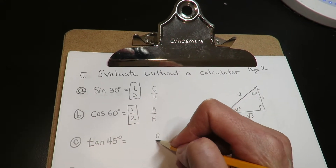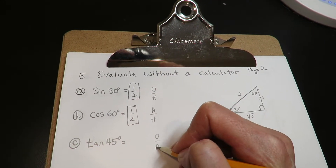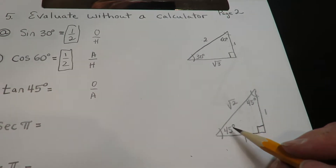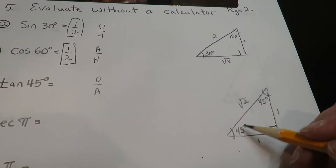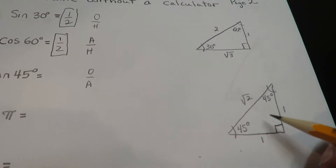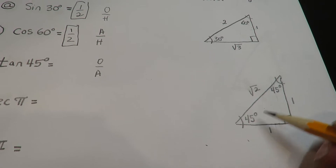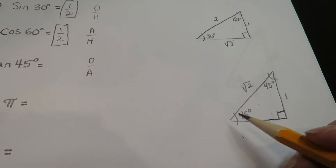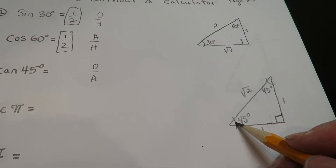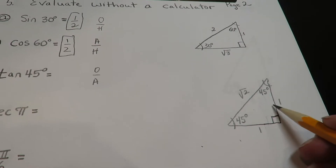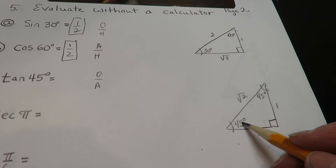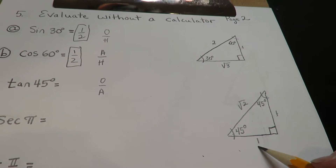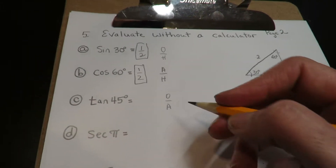Tangent is the opposite over the adjacent. I'm at 45 degrees, so I go to this triangle. It doesn't matter which 45 you pick — they're both the same. If I stand here and look for the opposite, this would be opposite and this would be adjacent to me. So it's one over one, which is one.